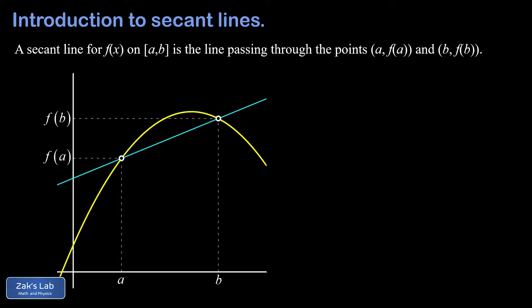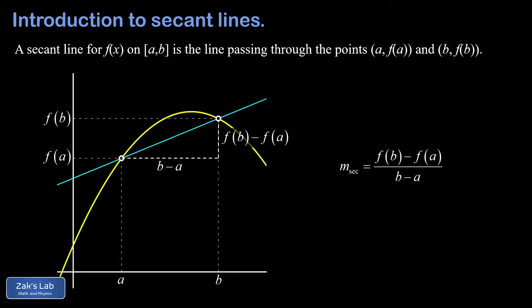The slope is just the rise over the run between these two points. The rise is the difference in y coordinates, which is f of b minus f of a, and the run is the difference in x coordinates, which is b minus a. So the slope of a secant line on an interval a to b is given by f of b minus f of a, all divided by b minus a.